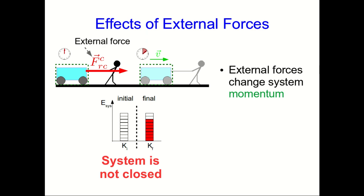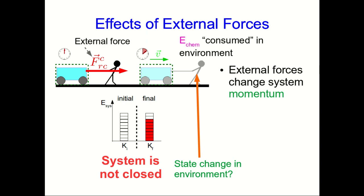The way we know to verify that is to look for a state change in the environment, and indeed there is one here, but it's rather subtle. The person is consuming chemical energy, and some of that is ending up as kinetic energy in the system and some of it is ending up as thermal energy in the person.